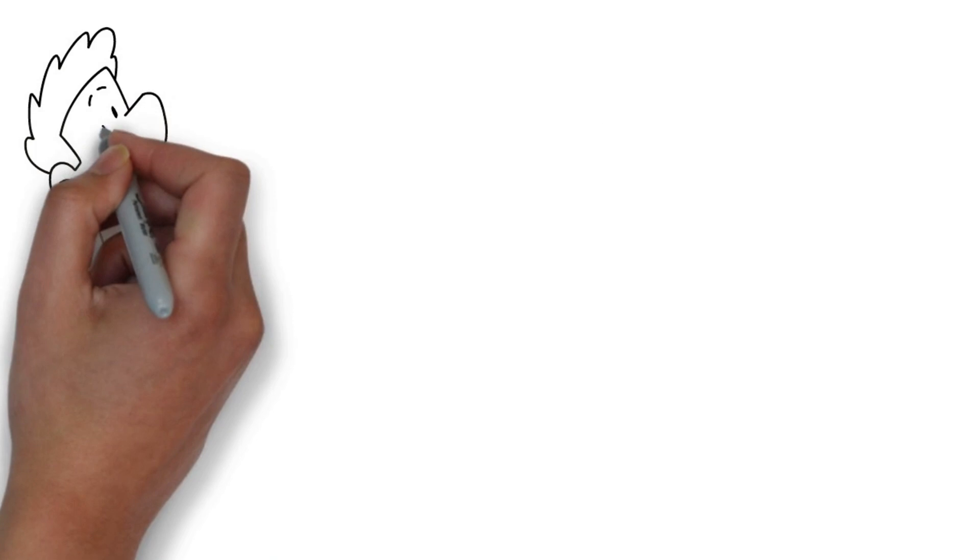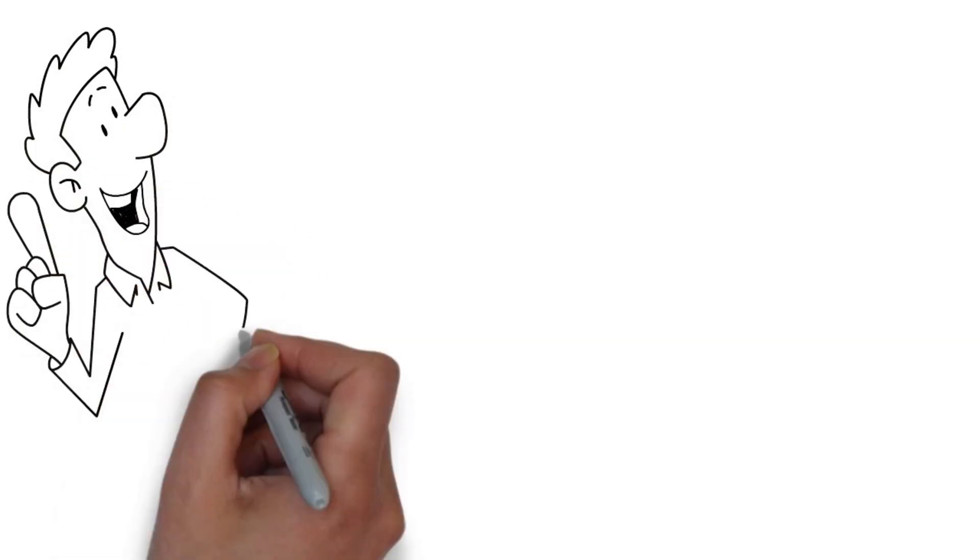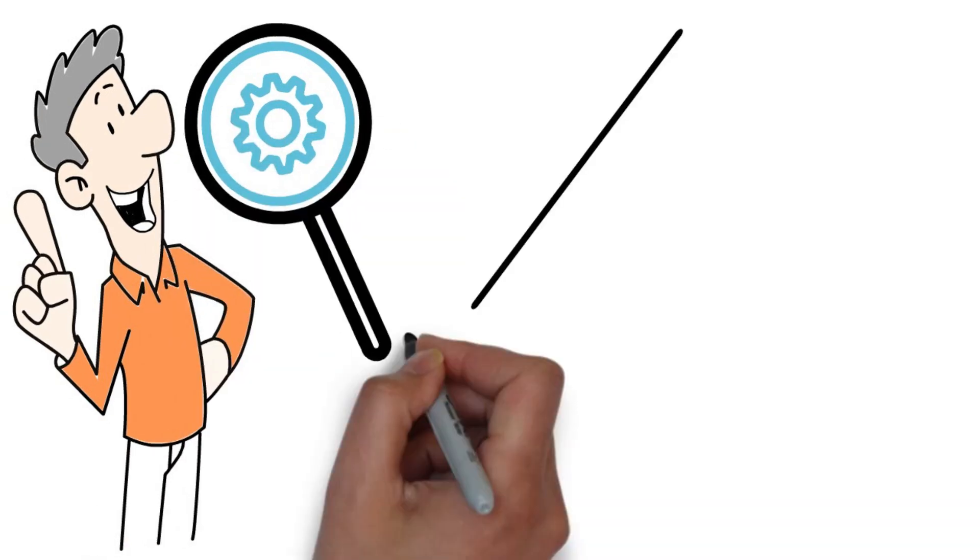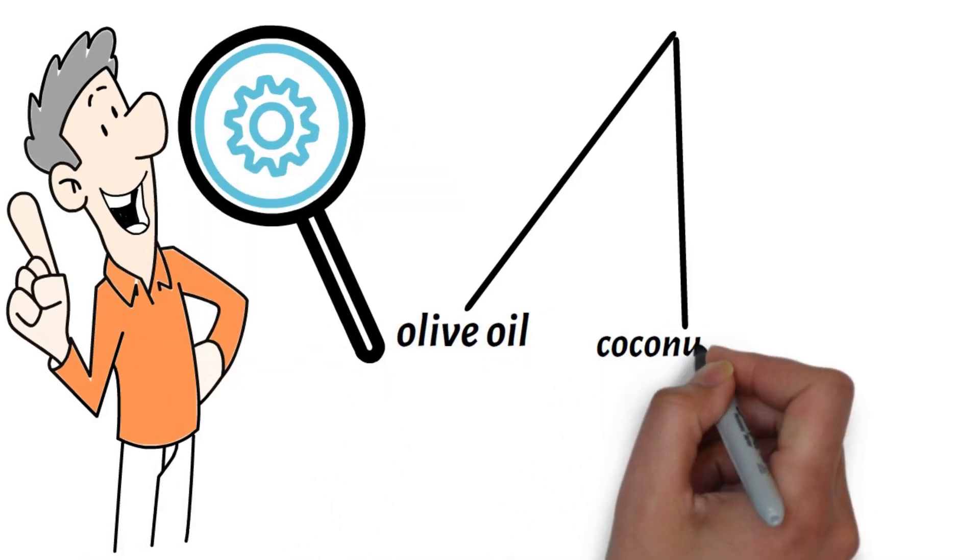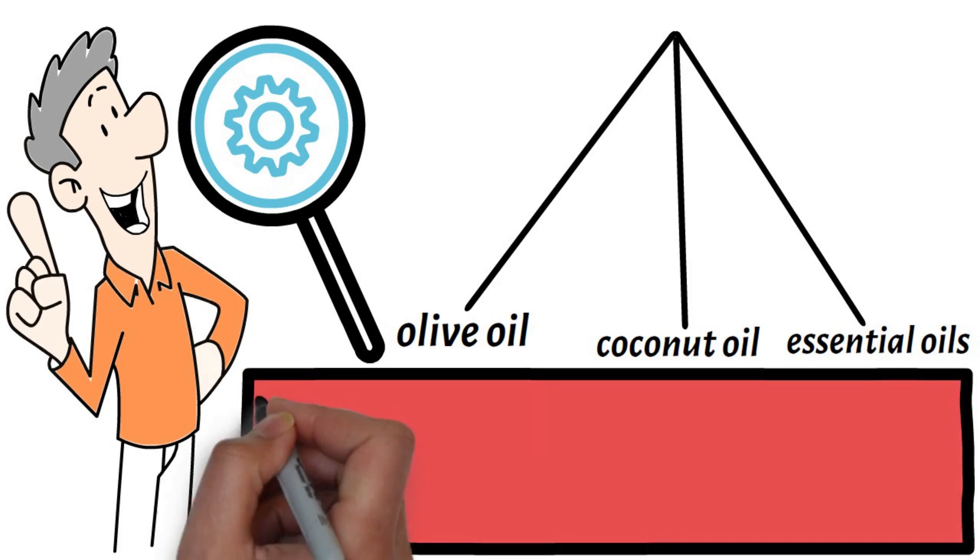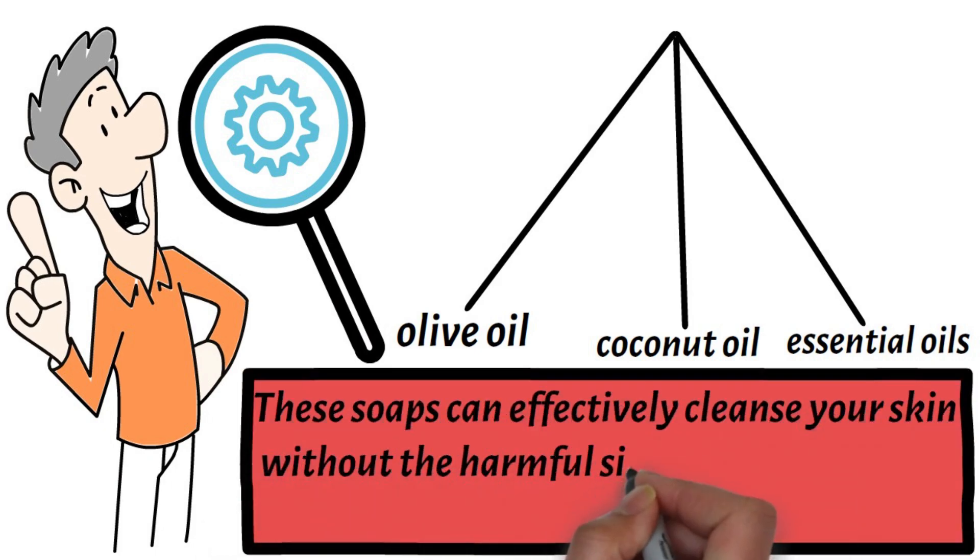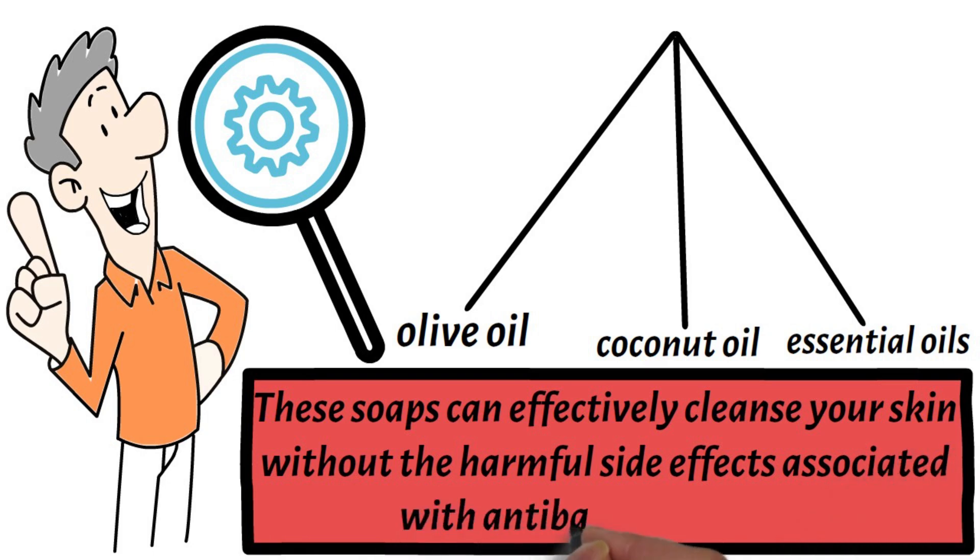Natural soaps without these chemicals are a much safer option. Look for soaps made with natural ingredients like olive oil, coconut oil, and essential oils. These soaps can effectively cleanse your skin without the harmful side effects associated with antibacterial agents.